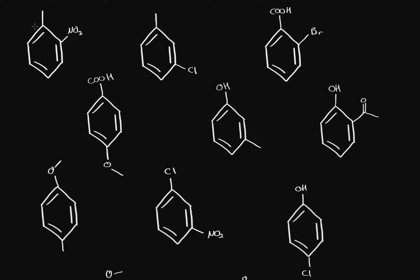In this first molecule, we have a methyl group which directs to the ortho and para positions — this one, and this one (we can't use the position already occupied by the nitrate). The nitrate group directs to the meta position, so it directs to this position and this position. We'll end up having up to two products for this one.